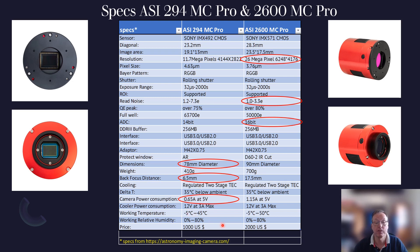The shorter back focal distance of the 294 is an advantage - for example, if you use a Newtonian reflector and put a 2600 in front of it, you have not only obstruction but very limited space, making it difficult to fit a filter drawer. Power consumption is also lower for the 294. Finally, the price tag: the 2600 has double the price of the 294. So our question remains - is the 2600 worth the higher price tag?